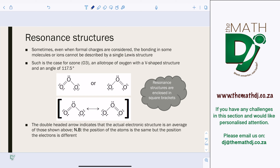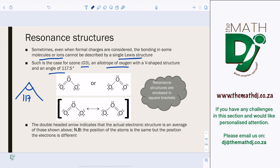Resonance structures: sometimes even when formal charges are considered, the bonding in some molecules or ions cannot be described by a single Lewis structure. For example, ozone (O3) is an allotrope of oxygen with a V-shaped structure and a bond angle of approximately 105 degrees.